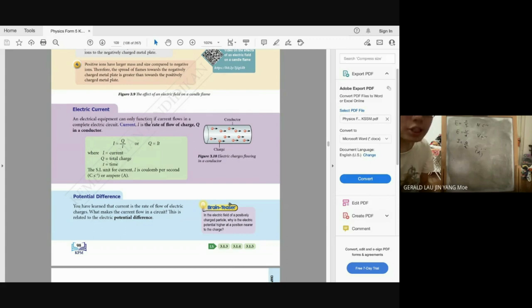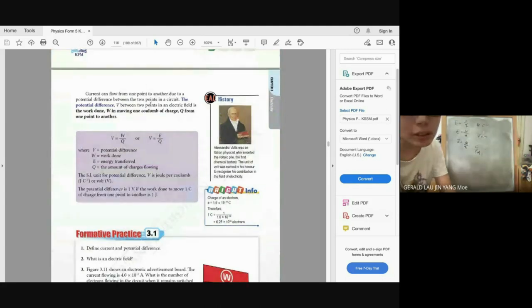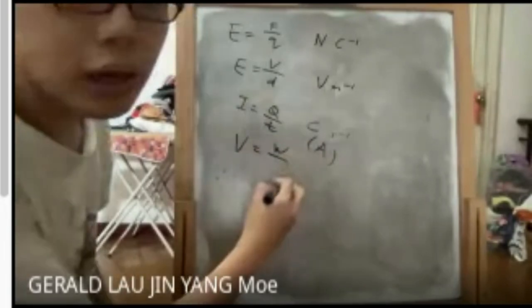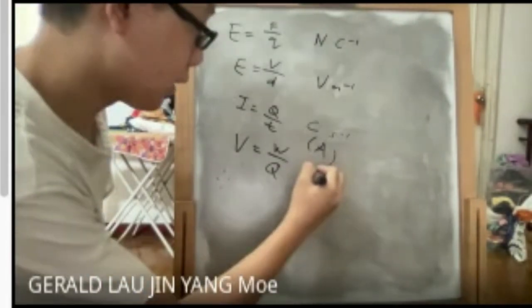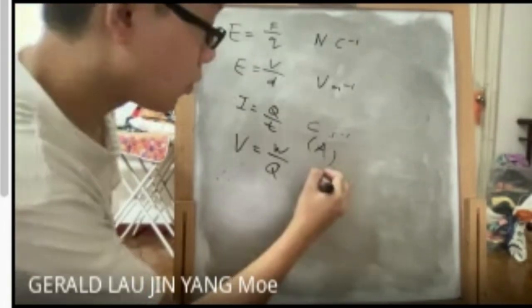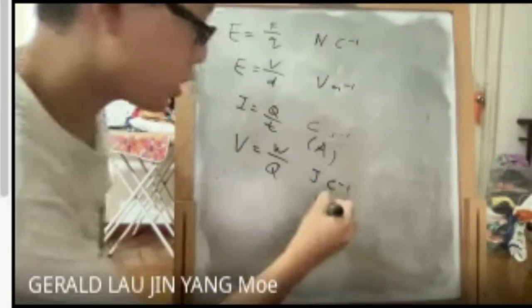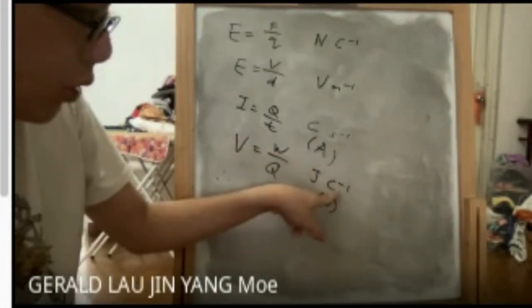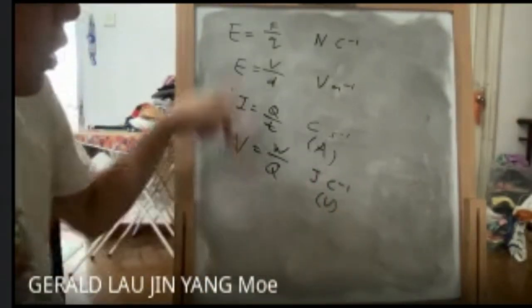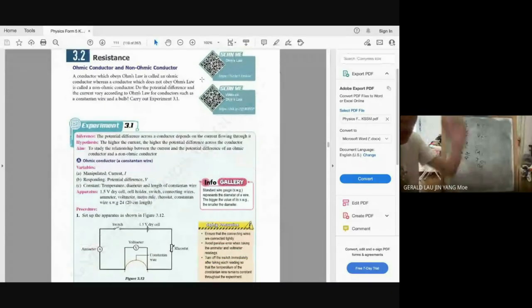Potential difference (voltage) between two points in an electric field is the work done in moving one Coulomb of charge from one point to another. The unit is Joule per Coulomb, which equals the Volt (SI unit). So you need one Joule of energy to move one Coulomb of charge — this is the definition of voltage.